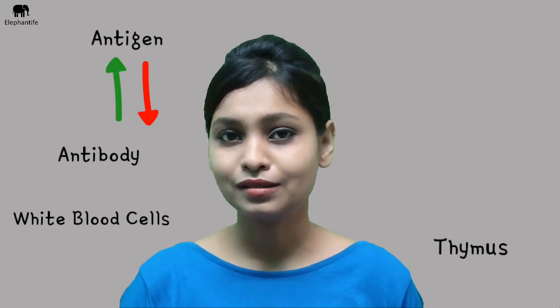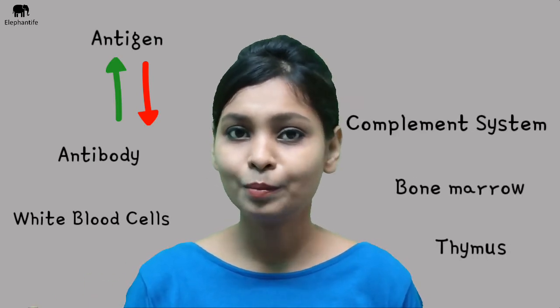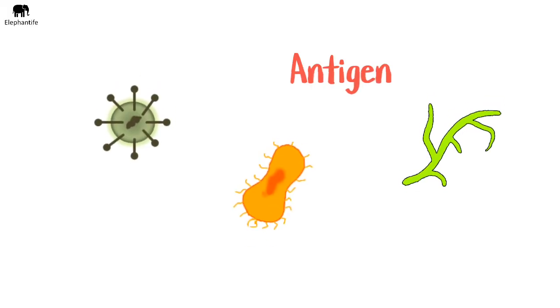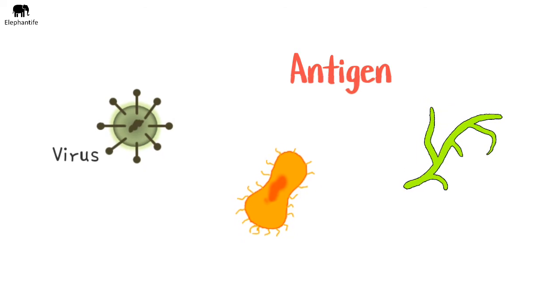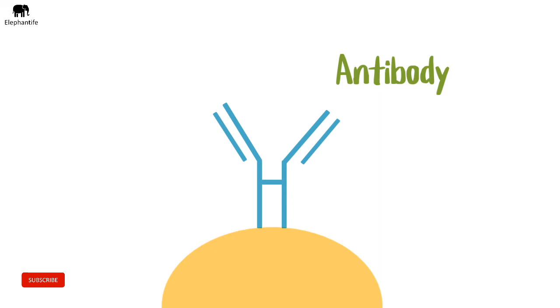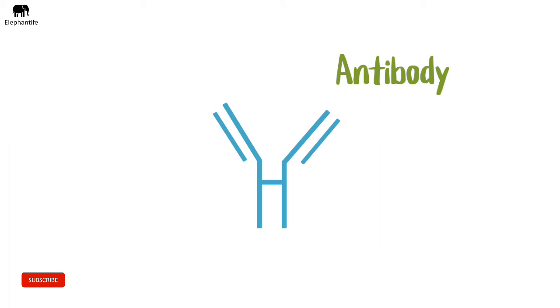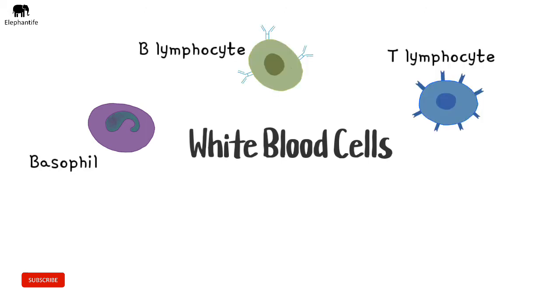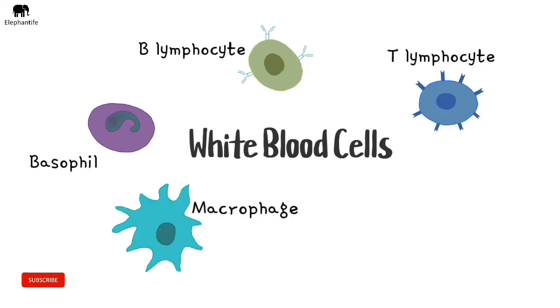Our immune system is composed of antigens, antibodies, white blood cells, thymus, bone marrow, the complement system, and the lymphatic system. An antigen is any pathogen — such as a virus, bacteria, or fungi — that can cause an infection. An antibody is a special protein produced by B lymphocytes to kill or weaken the antigen. White blood cells include basophils, B and T lymphocytes, macrophages, and natural killer cells.